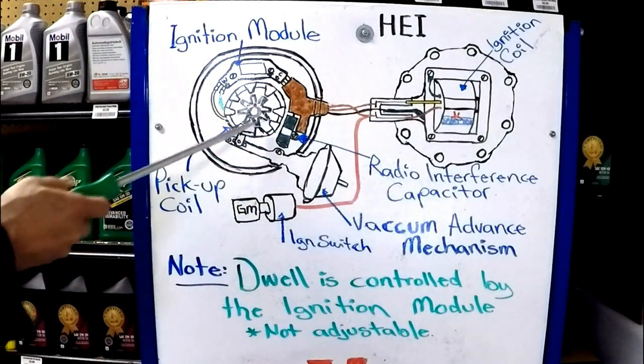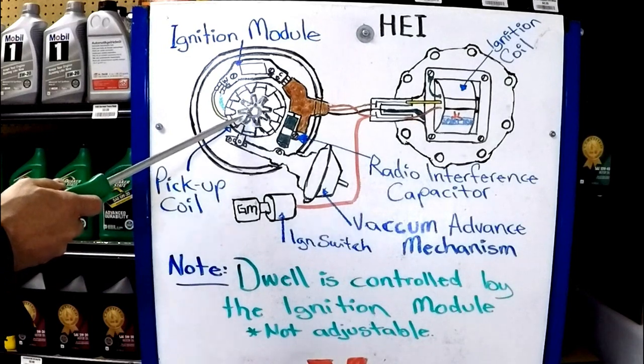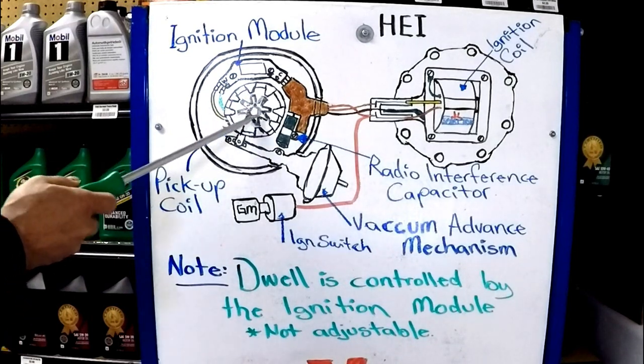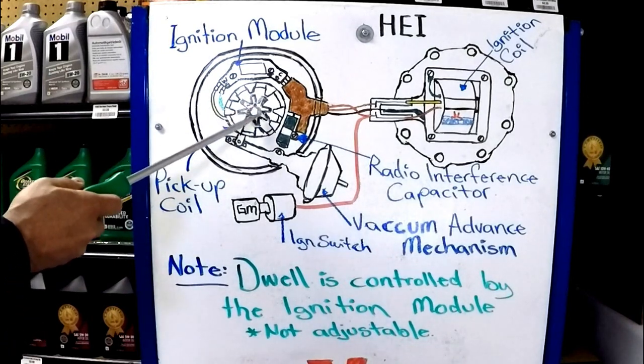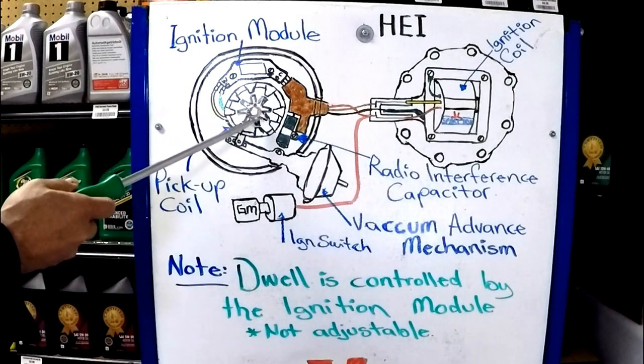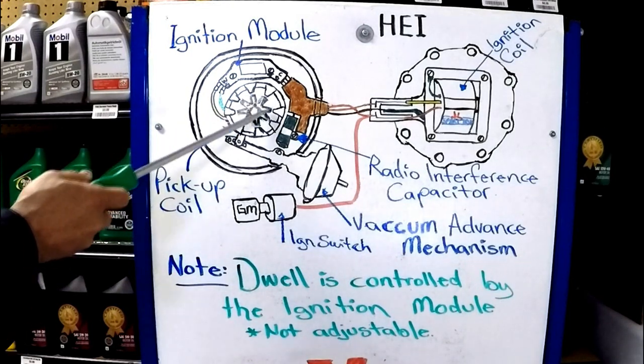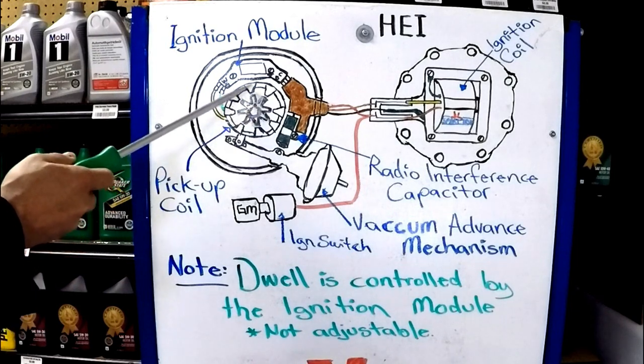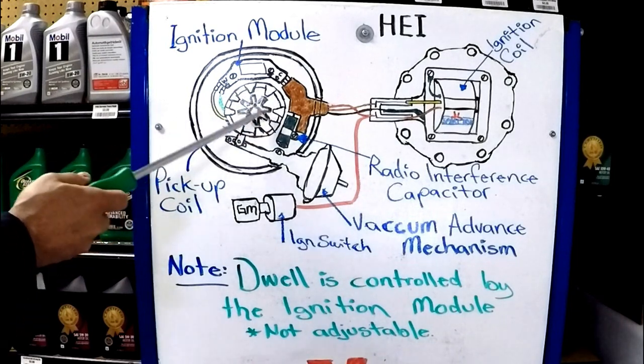Instead of points and condensers, there's a magnetic pickup coil. And if you saw the other videos, the distributor shaft had a cam with as many cam lobes as cylinders. This is not a cam per se, but this would allow the reluctor to work.